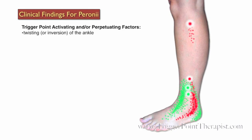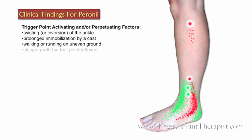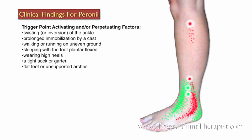Some factors that may activate or perpetuate trigger points in the Peronei group include twisting or inversion of the ankle, prolonged immobilization by a cast, walking or running on uneven ground, sleeping with the foot plantar flexed or the toes pointed, wearing high heels, a tight sock or garter, and flat feet or unsupported arches.